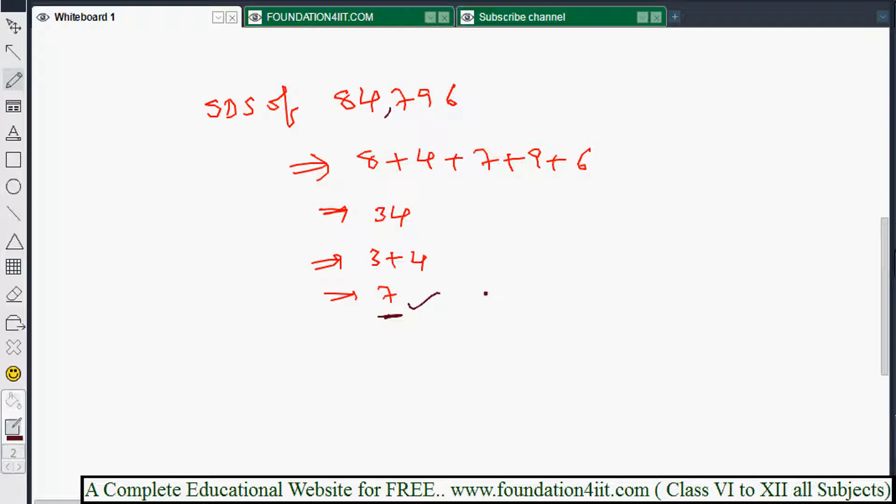So SDS means single digit sum of 84796 is 7. So if you are perfect in finding single digit sum, then next videos are very easy. You can check the solutions, even addition, subtraction, multiplication, divisions. Out of this four, whether the solution is right or wrong, we can check using this simple basic concept.